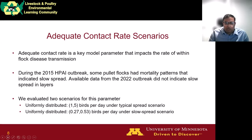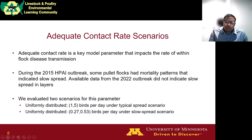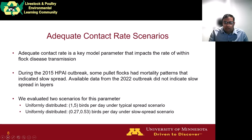An intuitive way to think about adequate contact rate is: if you place an infectious bird among susceptible birds, it's the number of birds that become infected per unit time. During the 2015 HPAI outbreak, some pullet flocks had mortality and test result patterns that indicated very slow spread, so we included a slow spread scenario in our analysis. However, available data from the 2022 outbreak did not indicate slow spread, so this may be less of a concern in the current outbreak. We evaluated two adequate contact rate scenarios: uniform 1 to 5 birds per day under the typical spread scenario, and uniform 0.27 to 0.5 birds per day under the slow spread scenario.